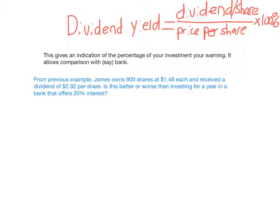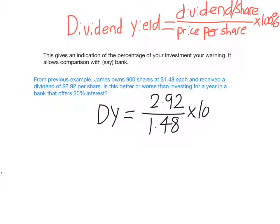Let's look back at our previous example. James bought 900 shares at $1.48 each and received a dividend of $2.92 per share. That's extremely high — he received a dividend much more than the share price; usually if you invest at $1.48 per share, the dividend per share would be much lower. Calculating dividend yield: DY = dividend per share ÷ price per share × 100%, which equals 197%.